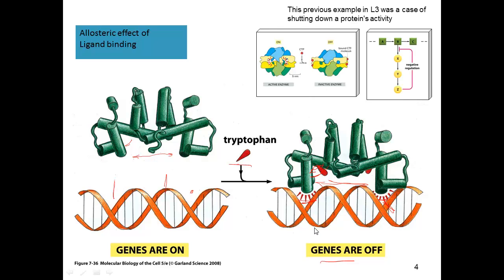Now I'd like to remind you about negative feedback regulation we saw earlier in the class, where CTP was molecule Z. CTP binds to this enzyme complex that converts B to X, and because we have enough CTP, it will bind and prevent the conversion of B to X, so all the intermediate molecules B will go on to make molecule C. In that case, we have negative feedback regulation of enzymatic activity. Down here with the TRIP repressor, we have negative feedback of genetic regulation. Same principle, different mechanism of controlling the regulation of the enzymes that you need.